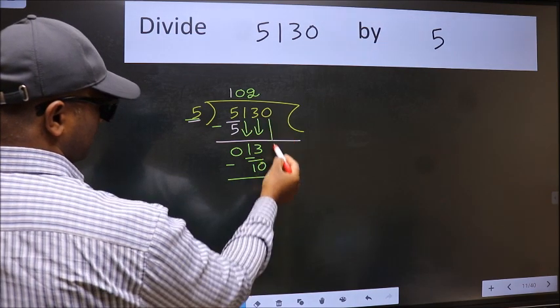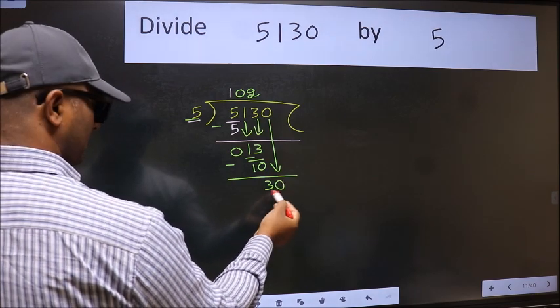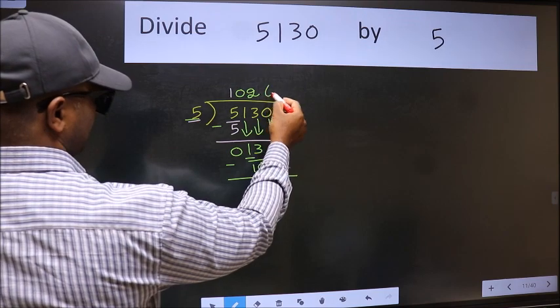After this, bring down the next number. So 0 down. 30. When do we get 30 in the 5 table? 5 times 6, 30.